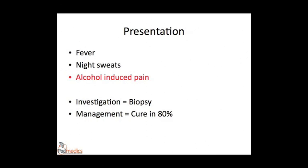First-line investigation is a lymph node biopsy to determine if this is Hodgkin's lymphoma, followed by staging with CT scans, bone marrow biopsies, and other biopsies if other organs are suspected to be involved — this really determines the prognosis. Management is complex; surgery is not useful, and the aim is to balance the benefits of cure, which is achievable in around 80%, against the danger of developing secondary malignancies from chemotherapy and radiotherapy.